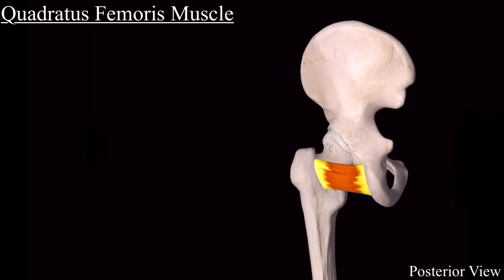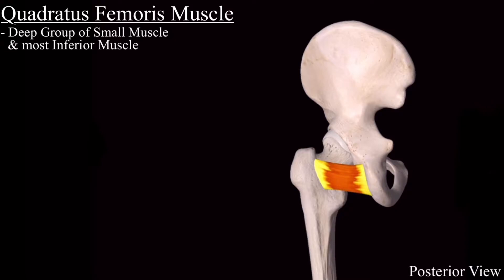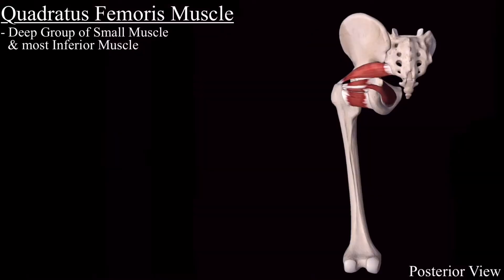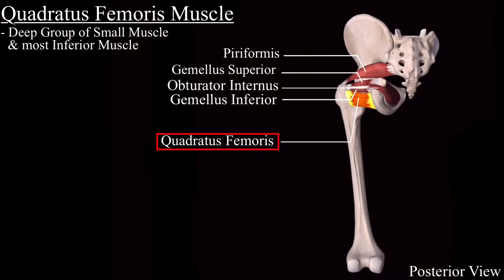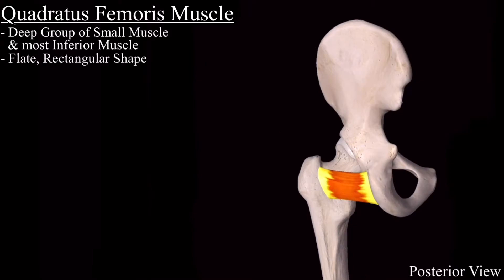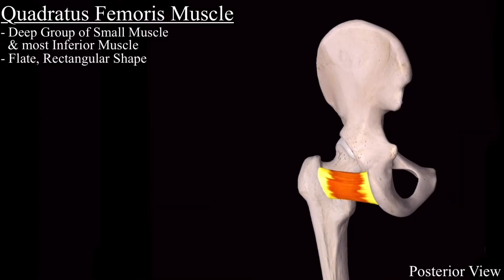Quadratus femoris is one of the deep group of small muscles, and among them it is the most inferior. It is a flat, rectangular-shaped muscle — as its name indicates, 'quadratus' means square or rectangular shape.